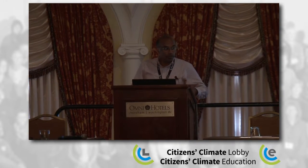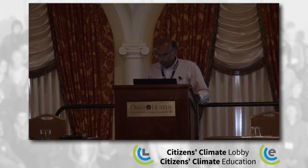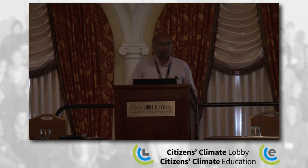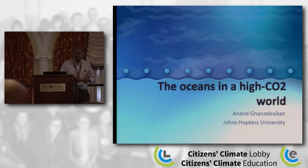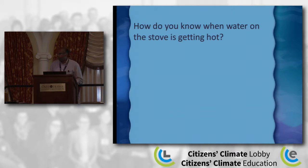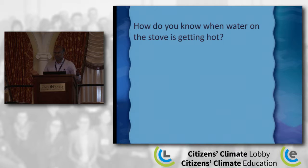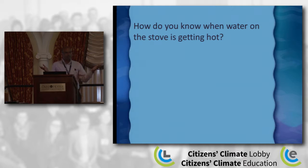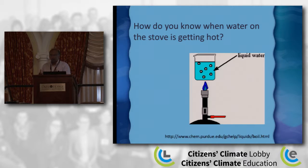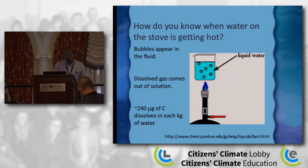I wanted to start off today by talking about some of the fundamental physics and chemistry that underlie climate change and its impacts on the oceans. A quick question to the audience: how do you know when water on the stove is getting hot? You see bubbles, right? When water gets hot, you see bubbles coming out. That comes from dissolved gas in the water coming out of solution.